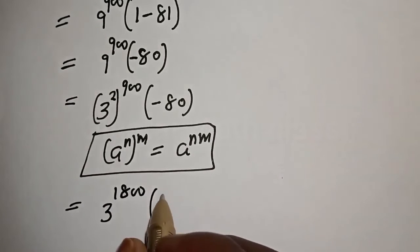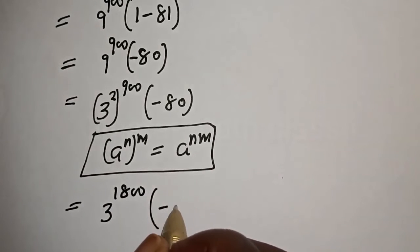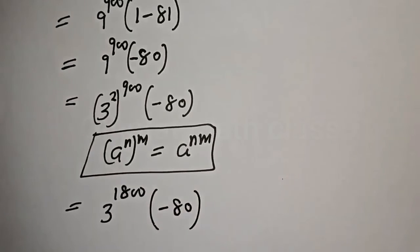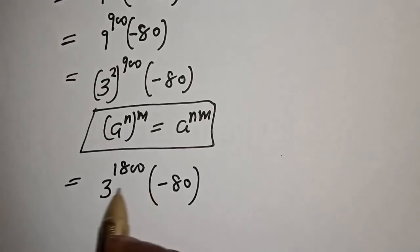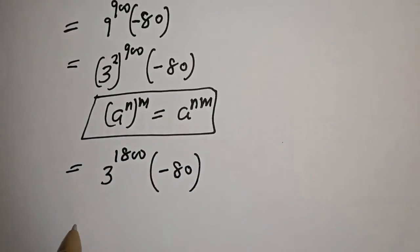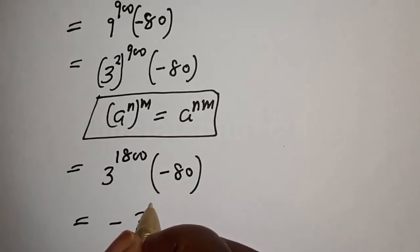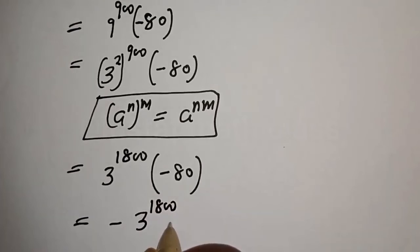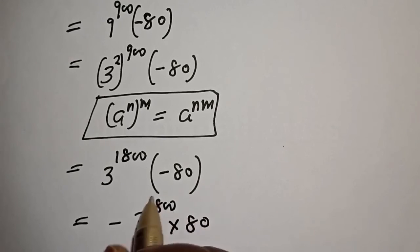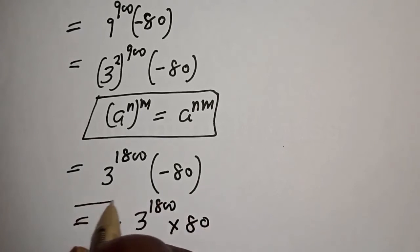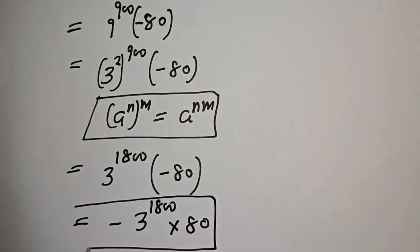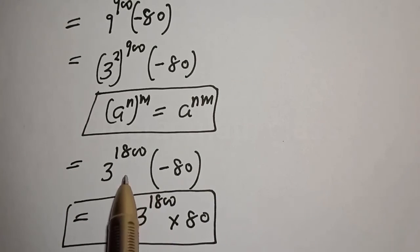Multiplying by negative 80, we bring the negative sign out. The final answer is negative 80 times 3 raised to power 1800. Thank you.